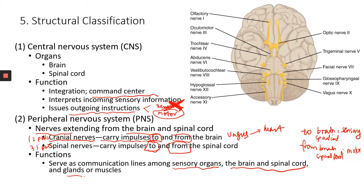This relates back to the first slide of the nervous system — the three components or three functional areas: the sensory, the integration, and the motor output.